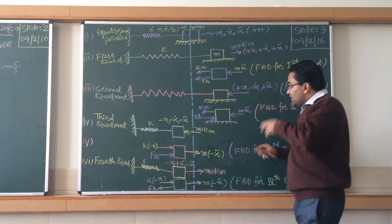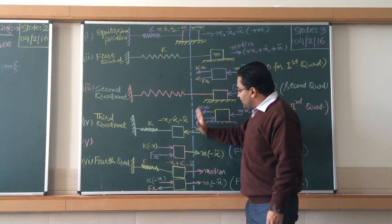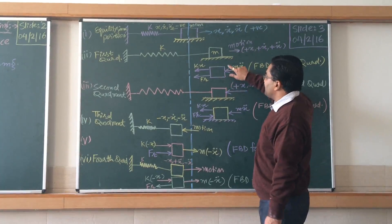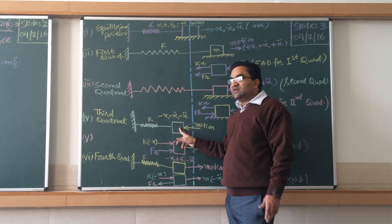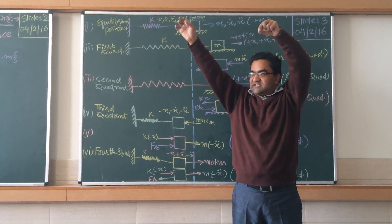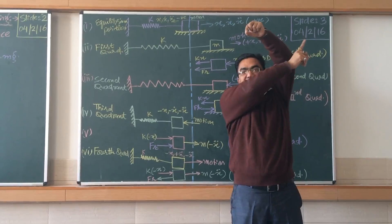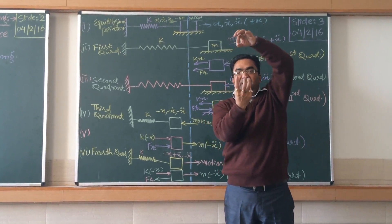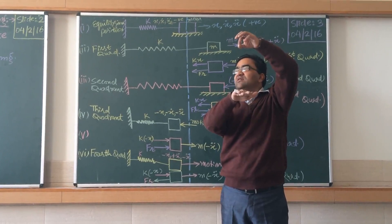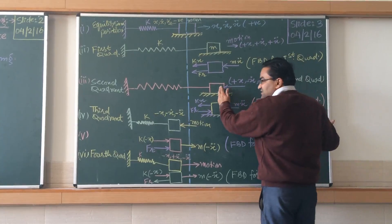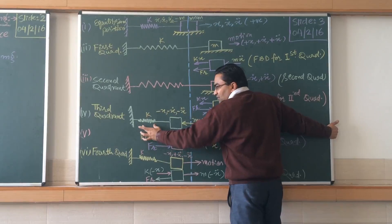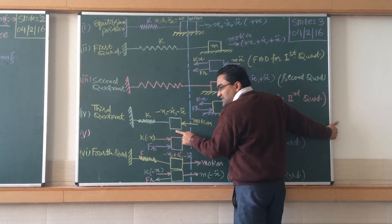After the second quadrant, the object crosses the mean line and reaches the second extreme position on the left side. This is analogous to a pendulum motion. The first extreme position was in quadrant 1 on the right side, and the second extreme position is in quadrant 3 on the left side. The direction of motion in quadrant 3 is toward the left.